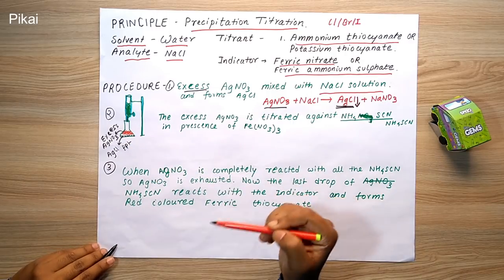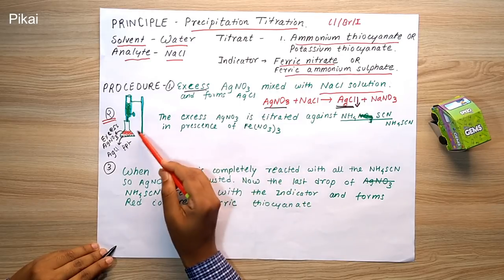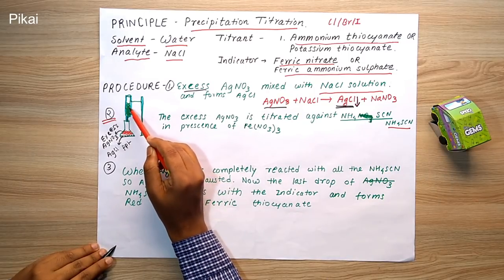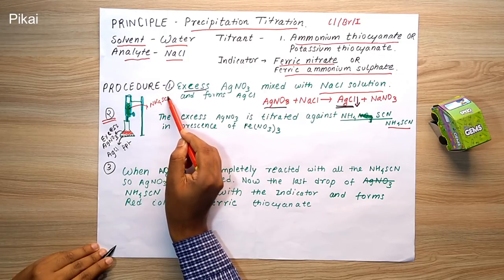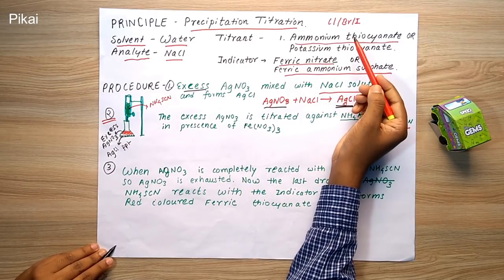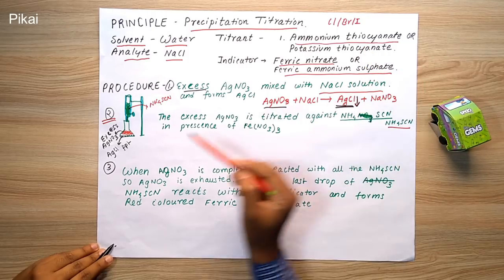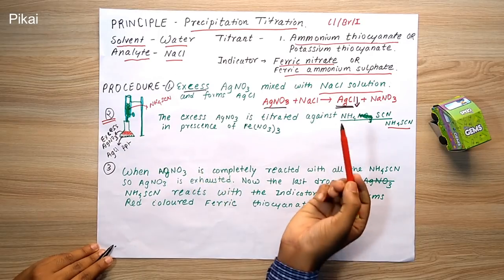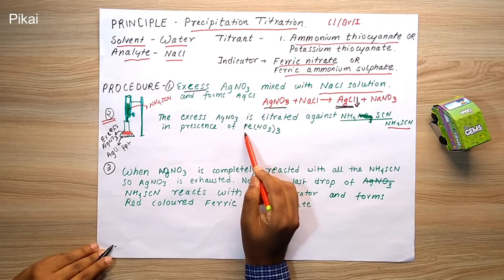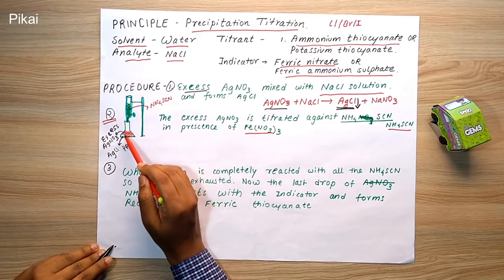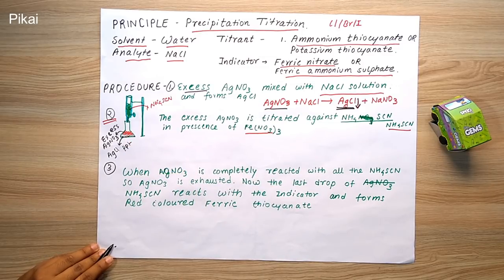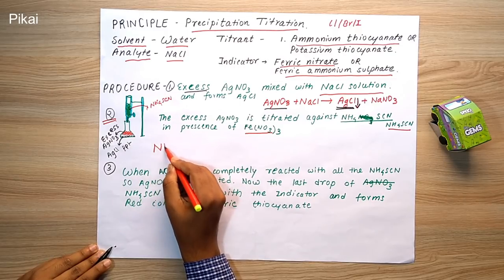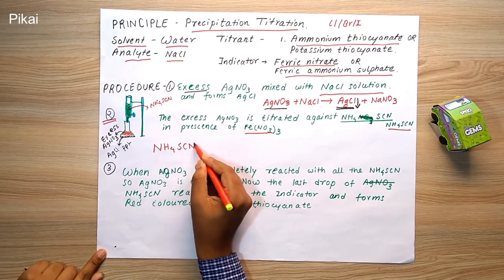In the second procedure, the excess AgNO3 remaining above the AgCl precipitate is reacted with NH4SCN (ammonium thiocyanate), which is shown in green on the burette. We can also use potassium thiocyanate instead. The ferric nitrate indicator — Fe(NO3)3 — is already inside the conical flask. When we open the burette, the NH4SCN drips out and reacts with the excess AgNO3.